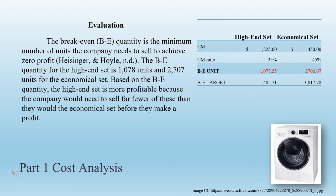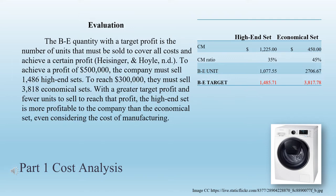The break-even quantity is the minimum number of units the company needs to sell to achieve zero profit. The break-even quantity for the high-end set is 1,078 units and 2,707 units for the economical set. Based on the break-even quantity, the high-end set is more profitable because the company would need to sell far fewer units before making a profit. To achieve a profit of $500,000, the company must sell 1,486 high-end sets; to reach $300,000, they must sell 3,818 economical sets. With a greater target profit and fewer units to sell, the high-end set is more profitable even considering manufacturing costs.